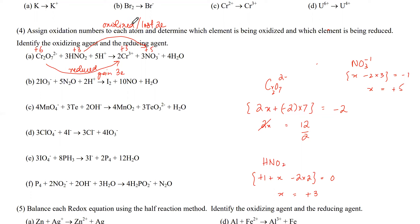Remember, the one that's getting reduced is known as the oxidizing agent. The one that's getting oxidized is known as the reducing agent. The names are opposite. The one who's getting reduced is known as the oxidizing agent because it's oxidizing the other one. The one that's getting oxidized is known as the reducing agent.